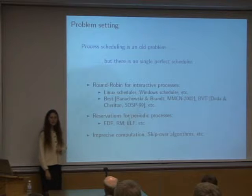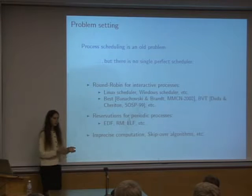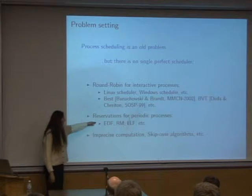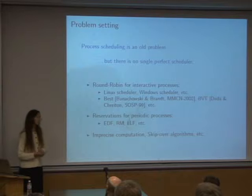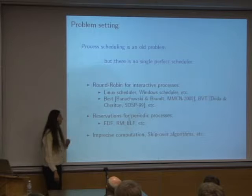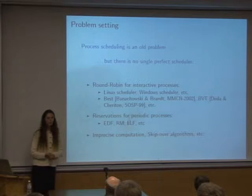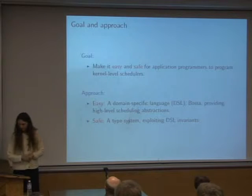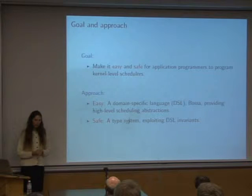For some applications, not having guarantees about how much processor time a process gets is unacceptable. There have been other kinds of scheduling algorithms — earliest deadline first, rate monotonic, and so on — which give a process guarantees about how much CPU time it's going to get. On the other hand, these are more demanding of the user, who needs to give the operating system more information so that it can ensure these guarantees can be respected. These two kinds of algorithms target different kinds of applications.